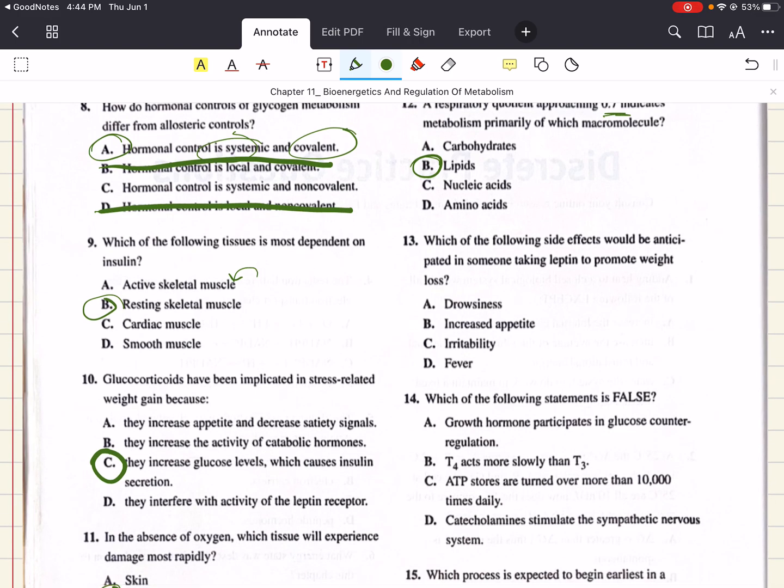13 says, which of the following side effects would be anticipated in someone taking leptin to promote weight loss? Well, leptin acts to decrease appetite by inhibiting the production of orexin. Orexin is associated with alertness. So decreasing the level of orexin in the body is expected to cause drowsiness. But even without this information, the answer can still be obtained. It should be apparent because the body tends to maintain an energy balance. So if consumption decreases, energy uses are expected to decrease as well. And so one of the following side effects of that is going to be drowsiness. So 13 is A.